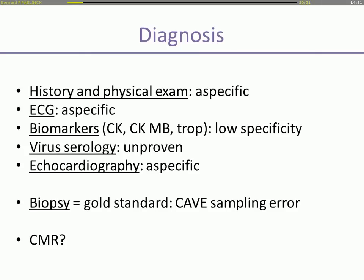History and physical exam are often non-specific, ranging from a clinical course to an acute myocardial infarction-like syndrome and/or to acute heart failure with hemodynamic compromise. ST-wave and T-wave changes are often non-specific. Biomarkers, including C-reactive protein, have a low specificity. The utility of viral serology is unproven. Echocardiographic findings are often non-specific but important to rule out pericardial effusion, valvular heart disease, to assess LV function, and to exclude other causes of cardiomyopathy such as restrictive cardiomyopathy and hypertrophic cardiomyopathy.